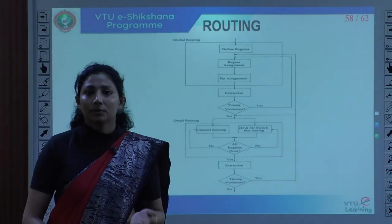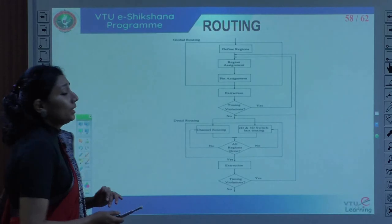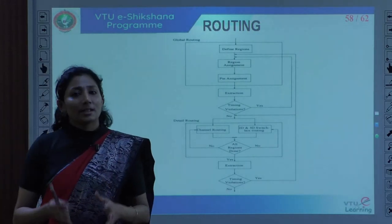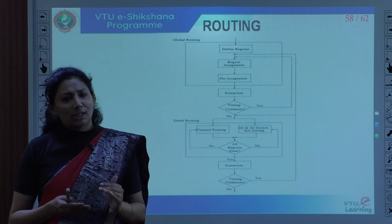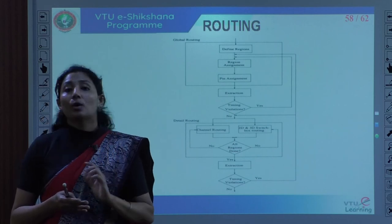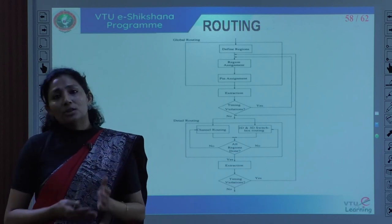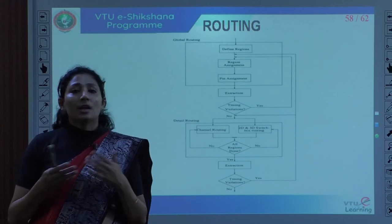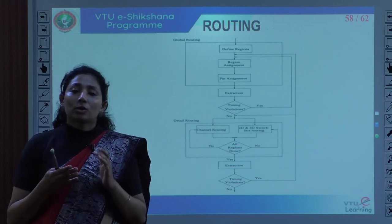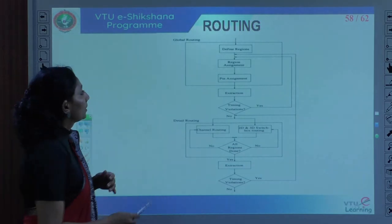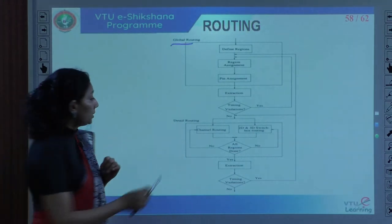After placement, the next step is routing. Routing is complicated; while performing floor planning and placement we fix the routing region and get an estimate of how routing can be done, but when we actually come to routing that information may not be enough. There are two stages in routing: the first is global routing and the second is detailed routing.